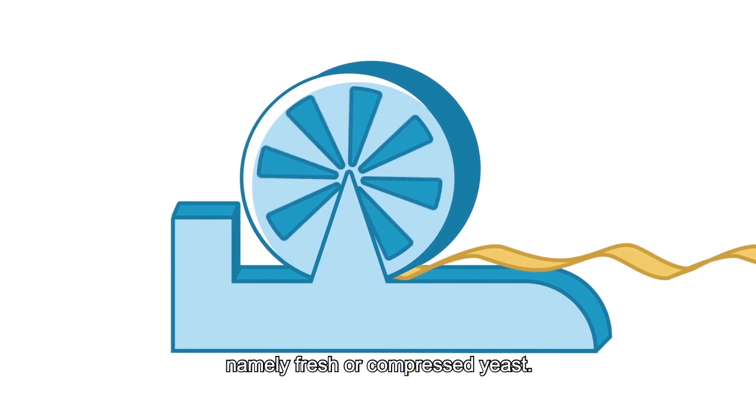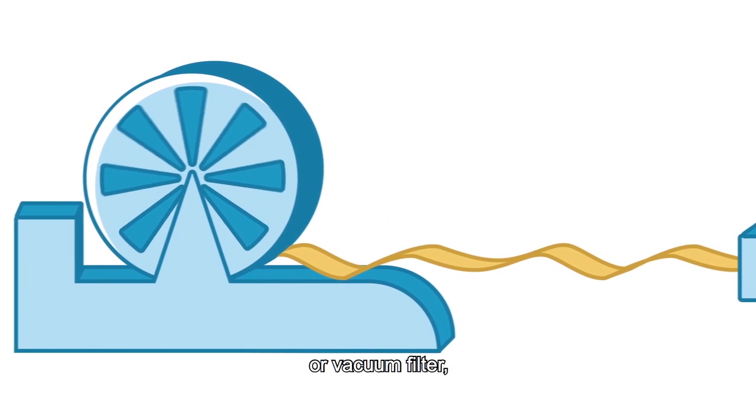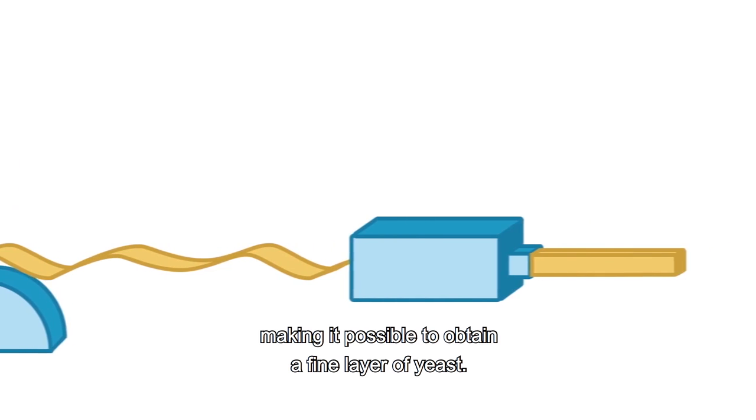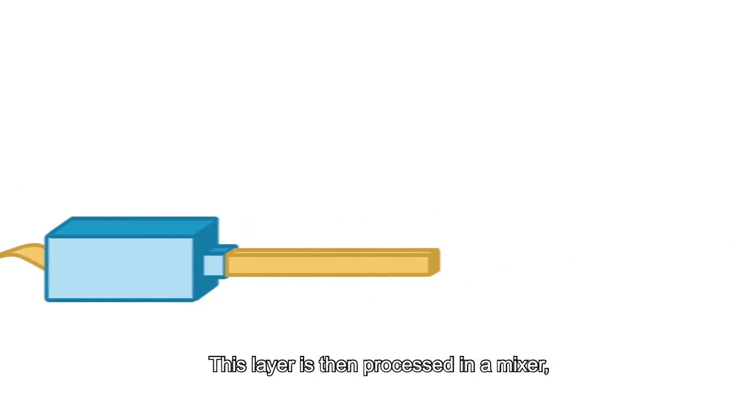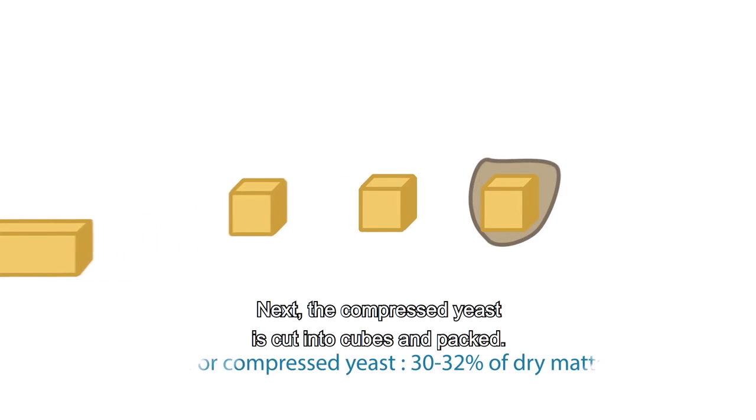namely fresh or compressed yeast. The yeast cream is passed through a rotary filter, or vacuum filter, a machine which sucks away the liquid, making it possible to obtain a fine layer of yeast. This layer is then processed in a mixer, which compresses the yeast. Next, the compressed yeast is cut into cubes and packed.